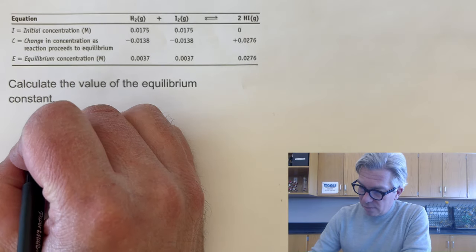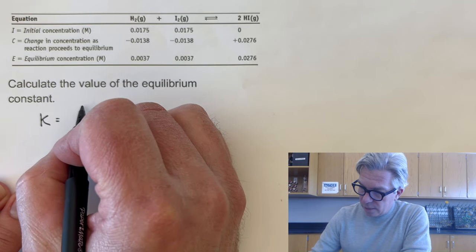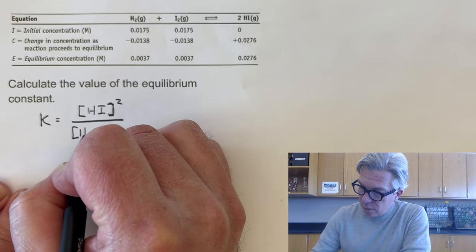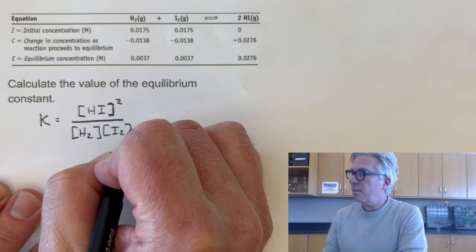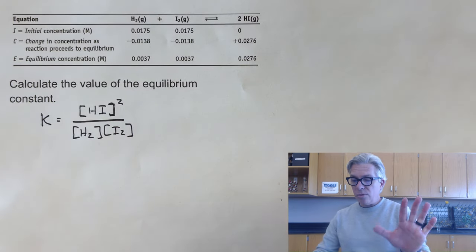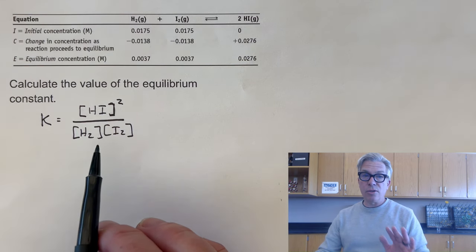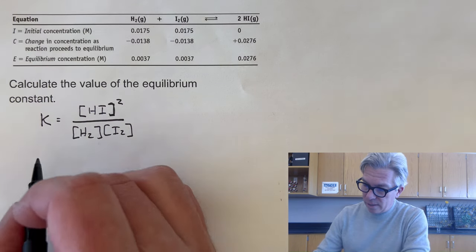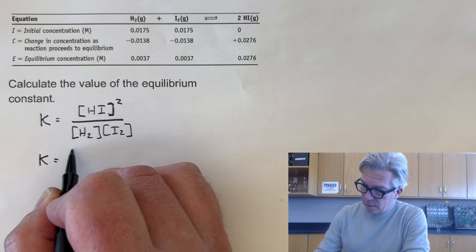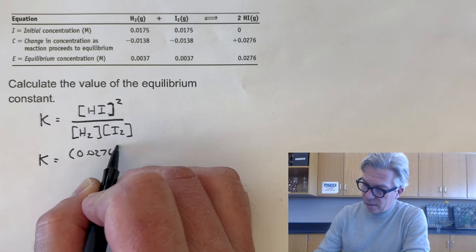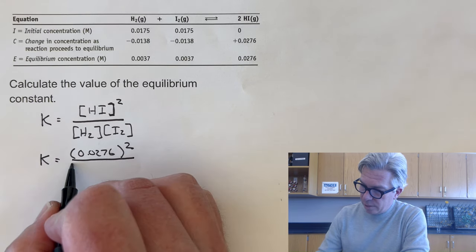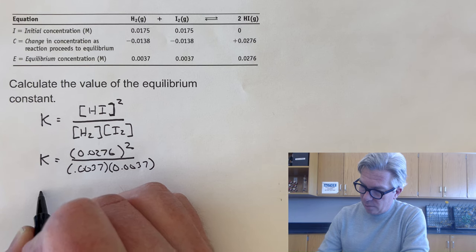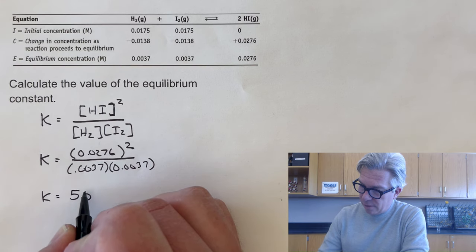If I subtract out what they changed from what they've started with, I'll get 0.0037 for both. And once you have those equilibrium concentrations, you can set up the equilibrium constant expression. And I'm going to put the HI squared over H2 and the I2 here. I always encourage you to write the equilibrium constant expression that you're going to use just so anybody reading your work can see exactly what you're doing from the get go. And there's no questions. And then once you have that in, you want to substitute in your values. 0.0276 squared over 0.0037 and 0.0037. And if I work out the math, I get a value of 55.6.